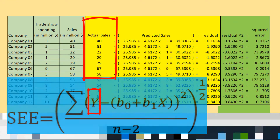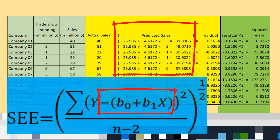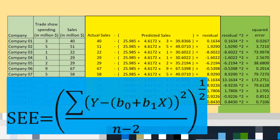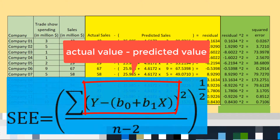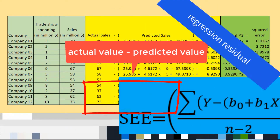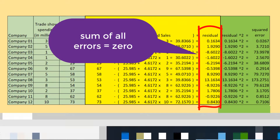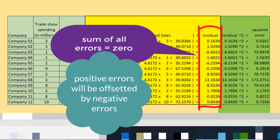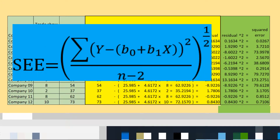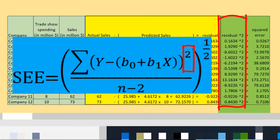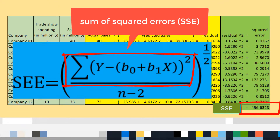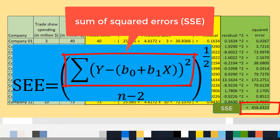In the formula, y is the actual value, minus (b₀ + b₁ times x), which comes from the formula of ŷ, the predicted value. We are computing the difference between actual values and predicted values of the dependent variable, which is the regression residual. Adding all the residuals results in zero because positive errors are offset by negative errors. To avoid this, we square the error values. The result is 456.6323, which is the sum of squared errors, or SSE.